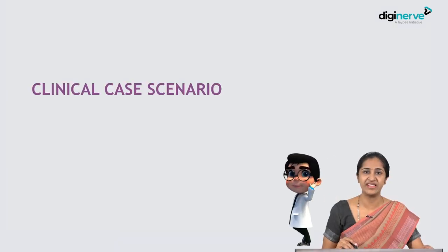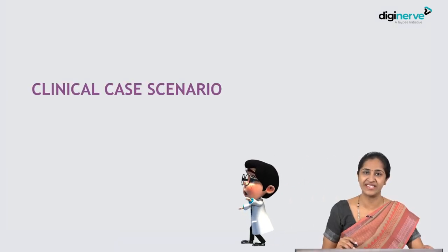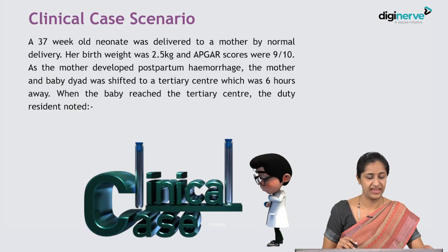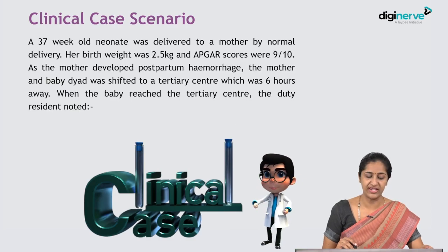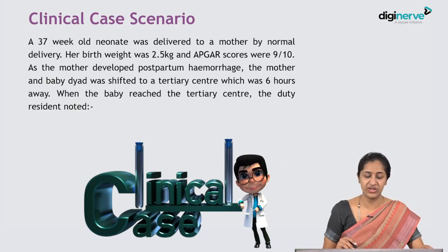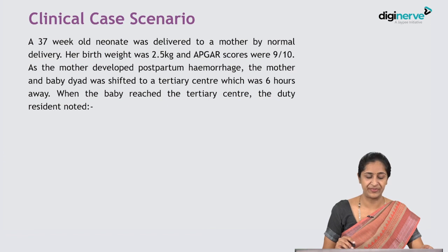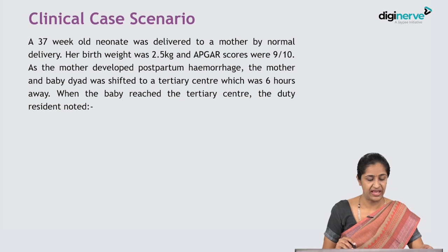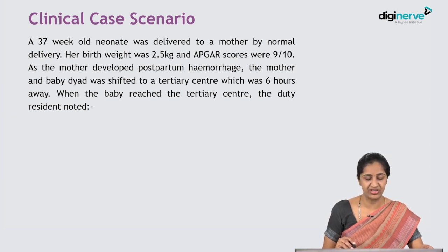Let's begin with the clinical case scenario. A 37-week neonate was delivered to a mother by normal delivery. Her birth weight was 2.5 kg and APGAR scores were 9 upon 10. As the mother developed postpartum hemorrhage, the mother and baby were shifted to a tertiary center which was 6 hours away.